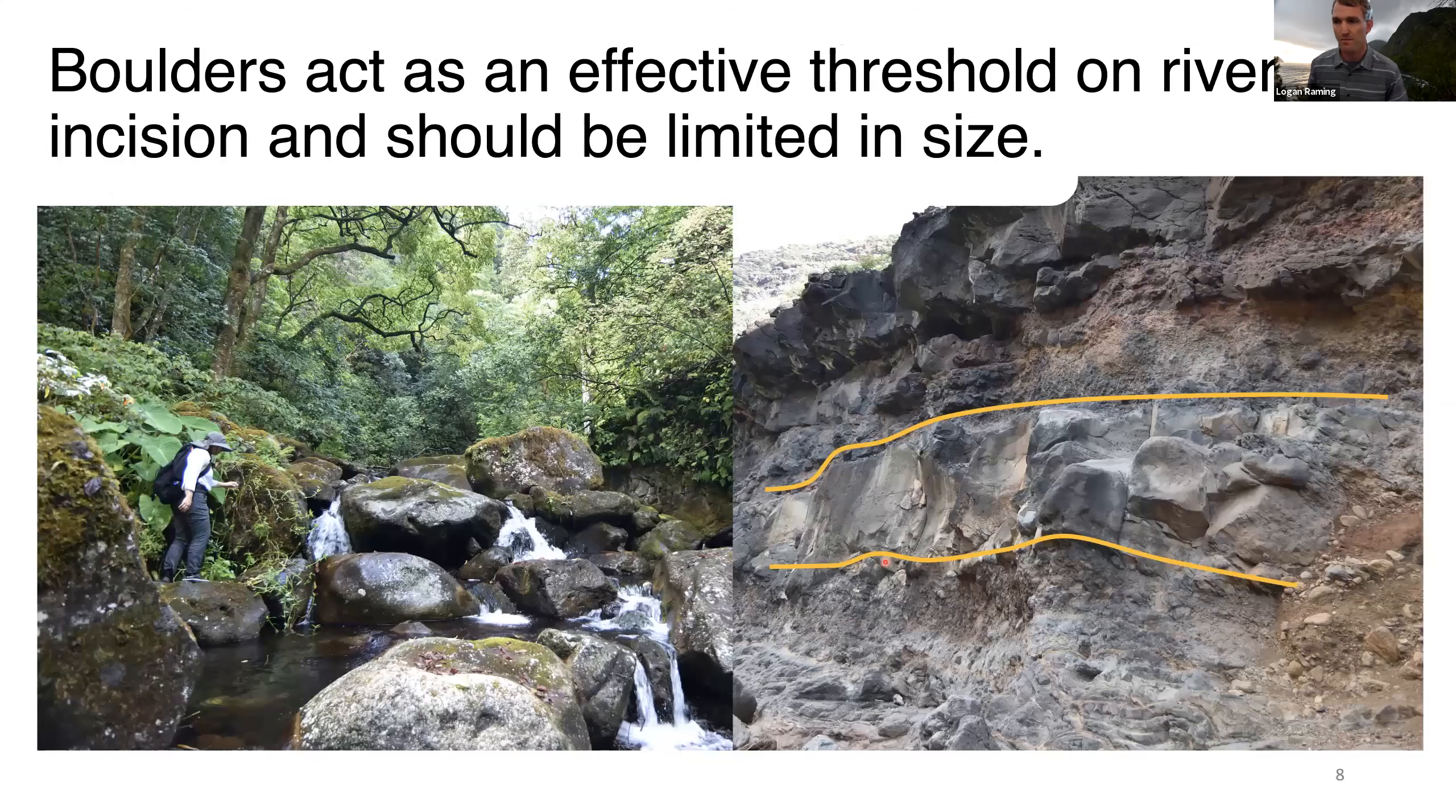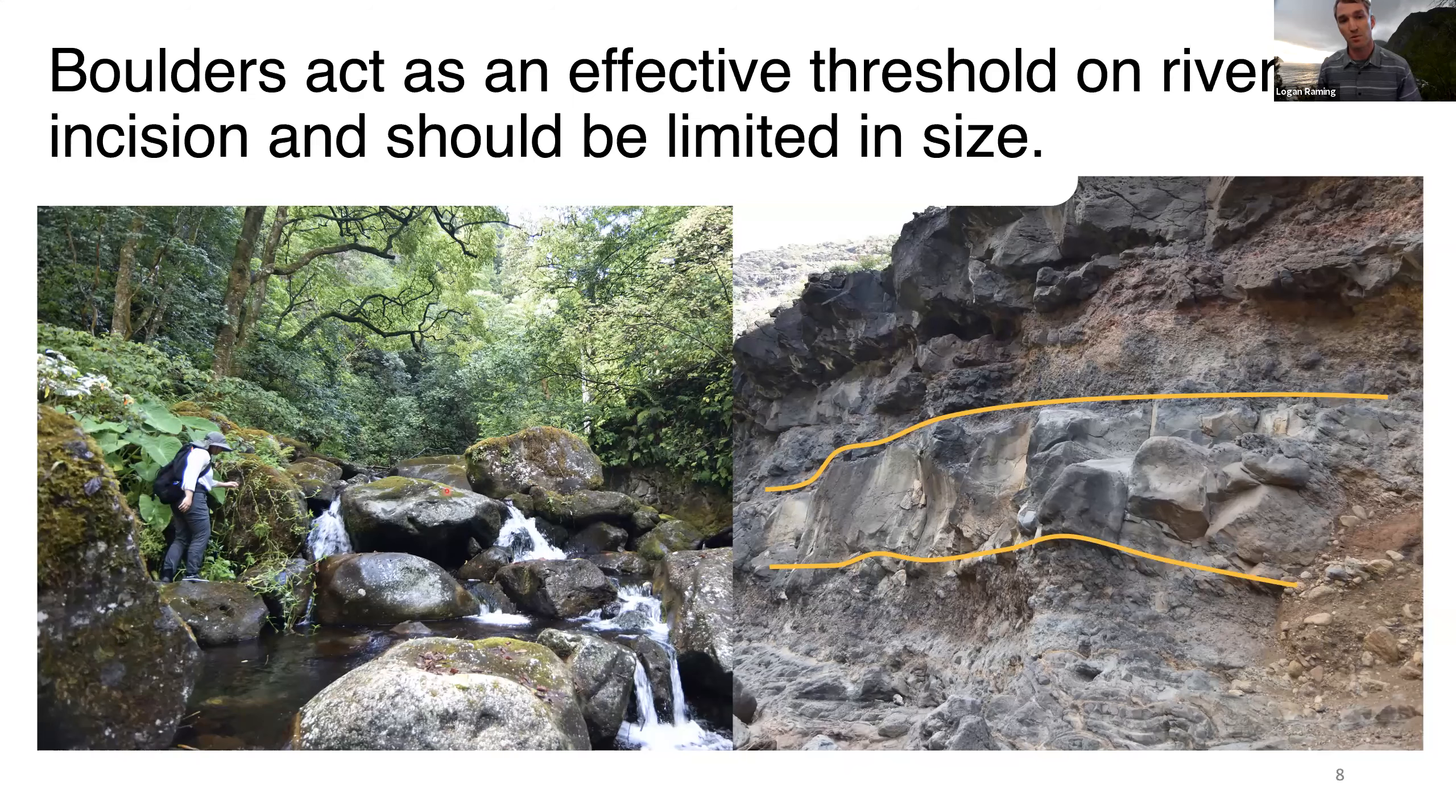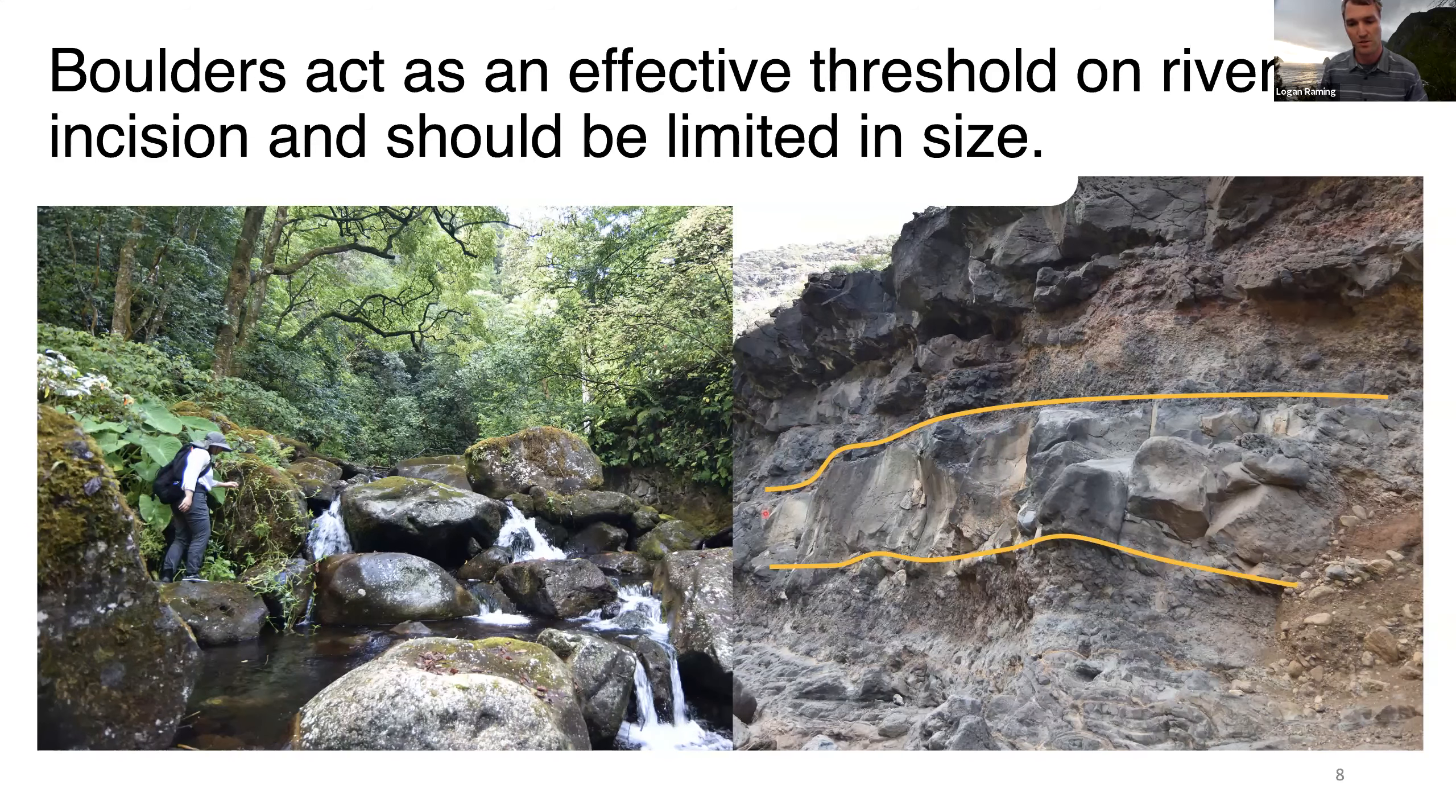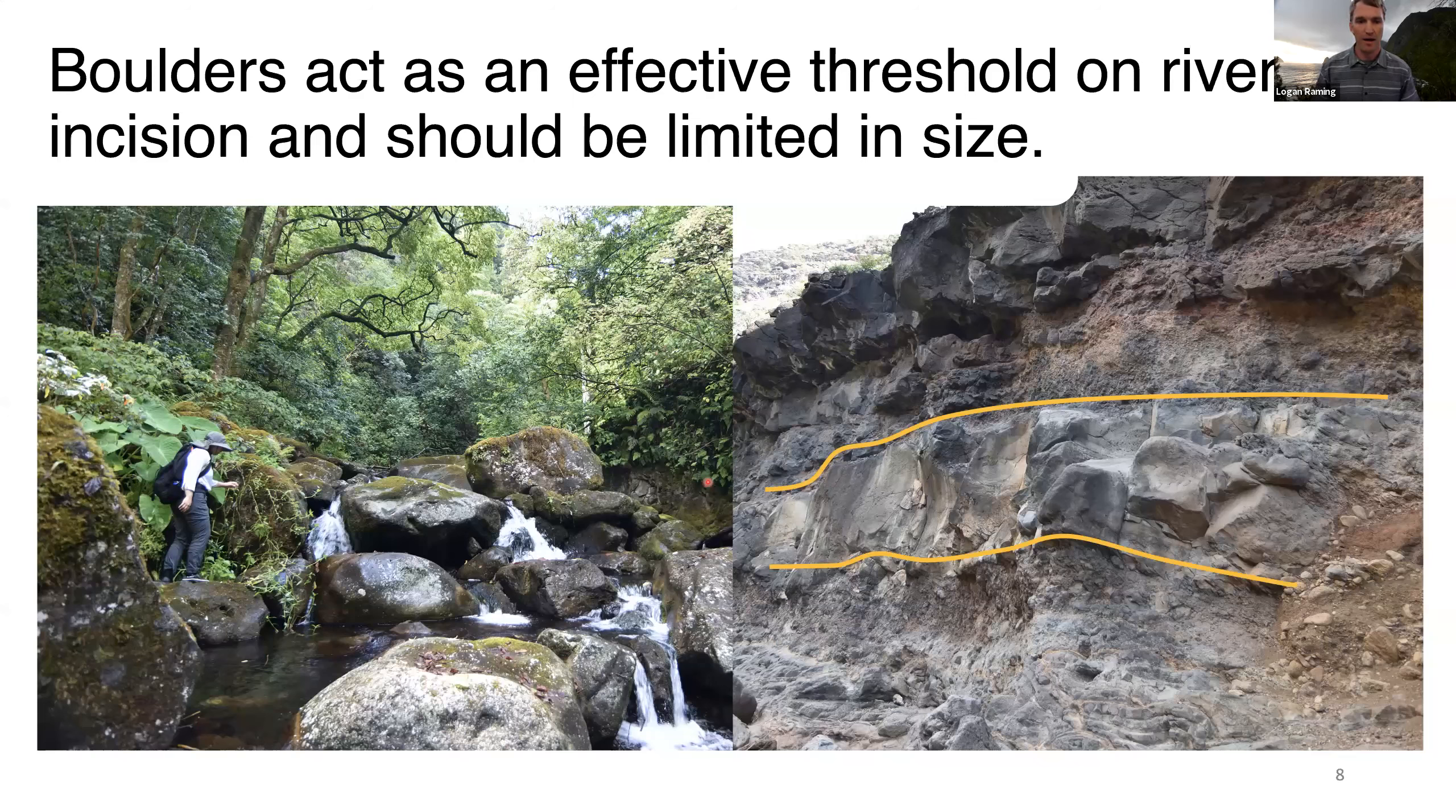Our third line of evidence comes from field observations. If you go to a stream in Hawaii, be prepared to climb over massive boulders. These boulders act as an effective threshold on river incision. Only a certain range of floods can actually move these boulders and incise the bedrock underneath. We can look at outcrops of basalt from shield building and see thick bands of aa that provide the source of these large boulders. The size of our threshold depends on the thickness of these aa flows. This shouldn't vary too much between islands, so we should have a relatively uniform threshold.